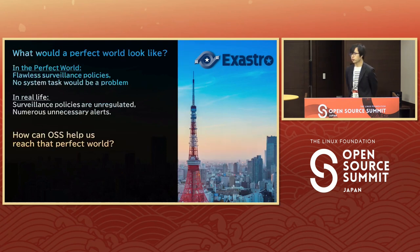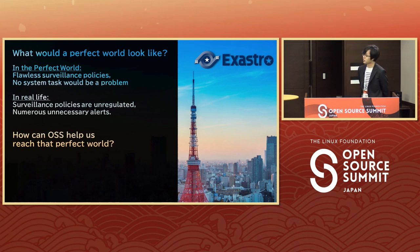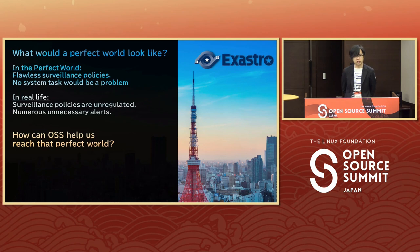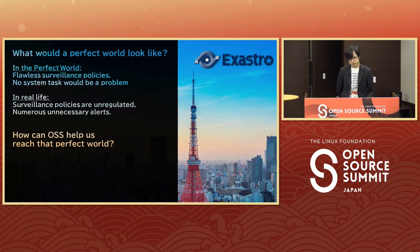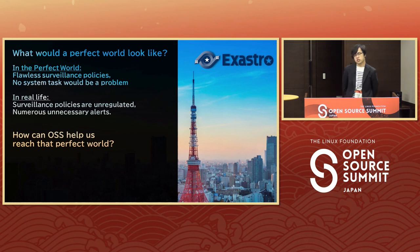Have you ever thought about what it would be like to live in the perfect world? In terms of system operations, I'm not going to talk about fixing world hunger today, but just think about it. In a perfect world, the whole system would be regulated by perfect surveillance policies and no system task would be any problem. In real life, that's not the case.